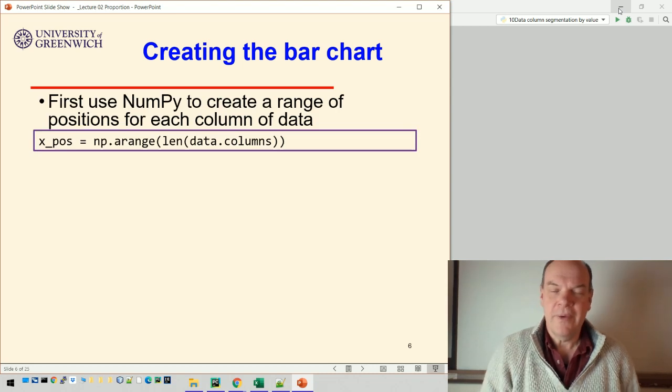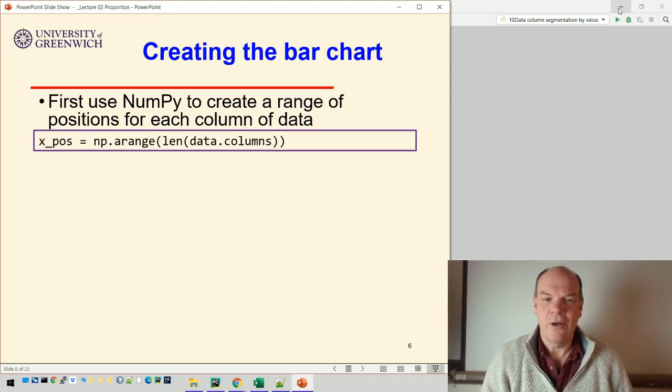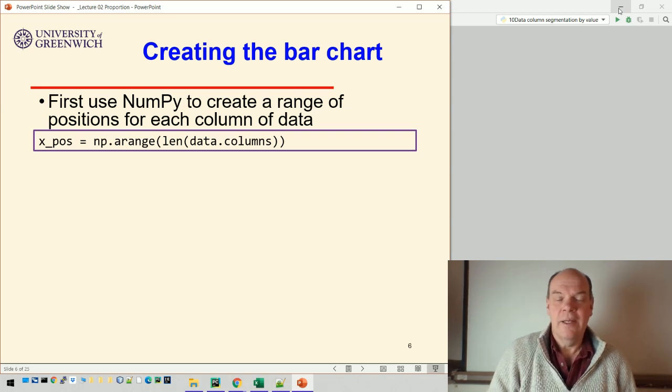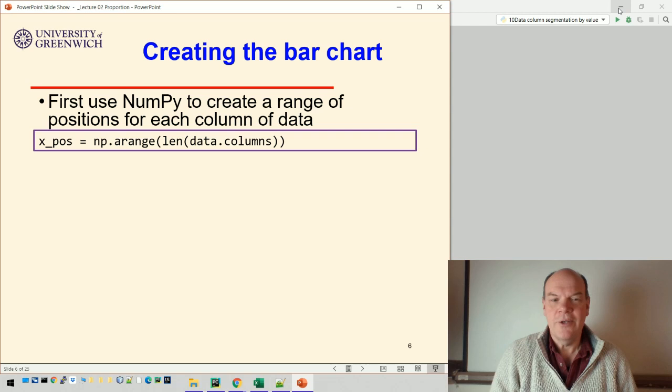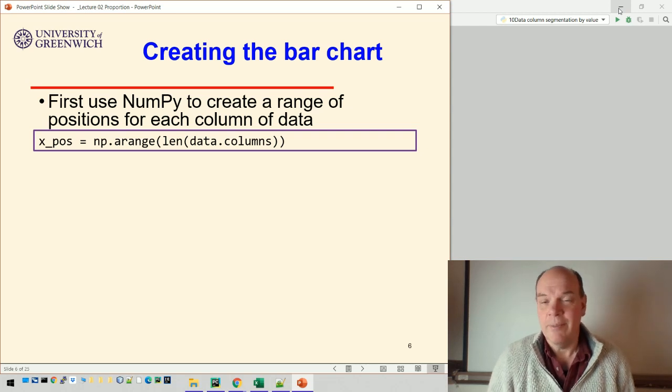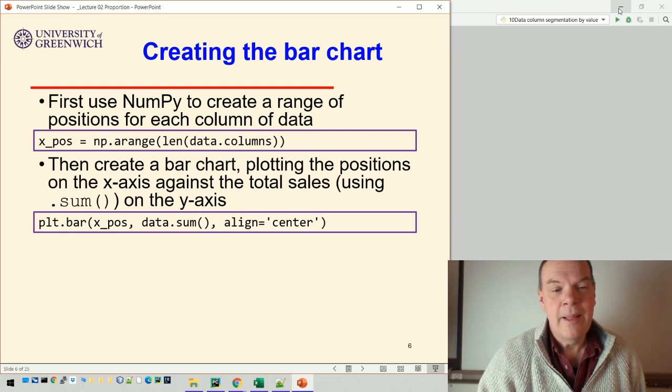And what do they do? Well, first of all, we use NumPy to create a range of positions for each column of data. So basically, this np.arange just returns a range of values. I think it starts at zero, but it might start at one. So it would be one, two, three, four, five up to 25, or it might start from zero. I can't remember. It doesn't really matter. That creates the positions.